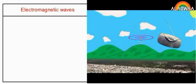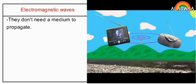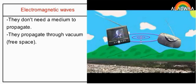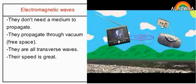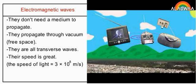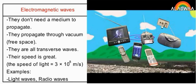Electromagnetic waves don't need a medium to propagate; they propagate through vacuum or free space. They are all transverse waves. Their speed is very great — the speed of light equals 3 × 10⁸ meters per second. Examples include light waves and radio waves.